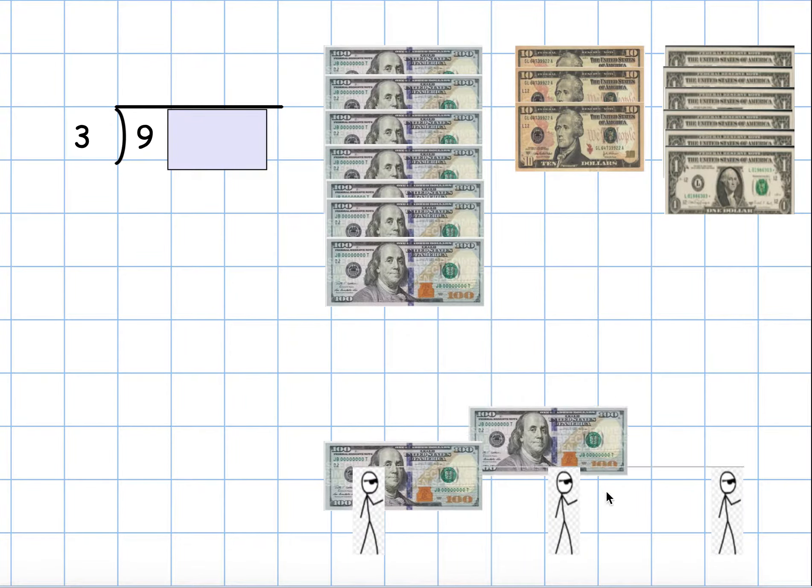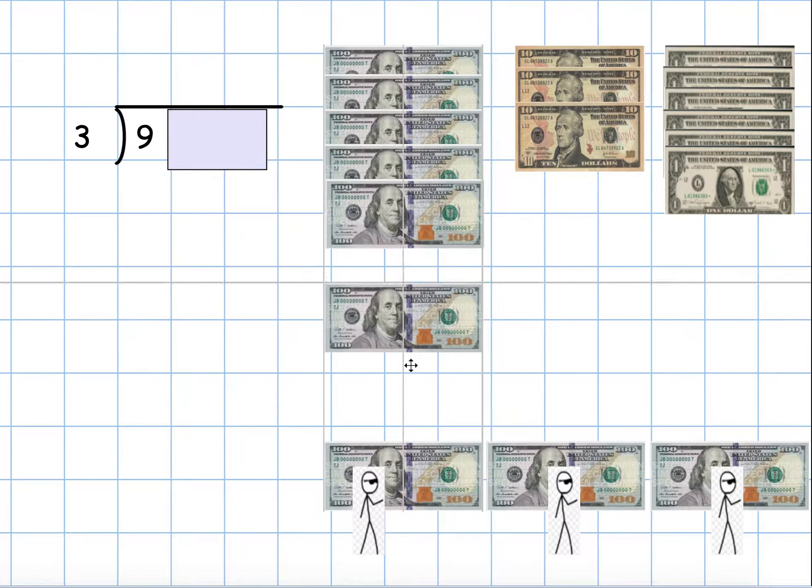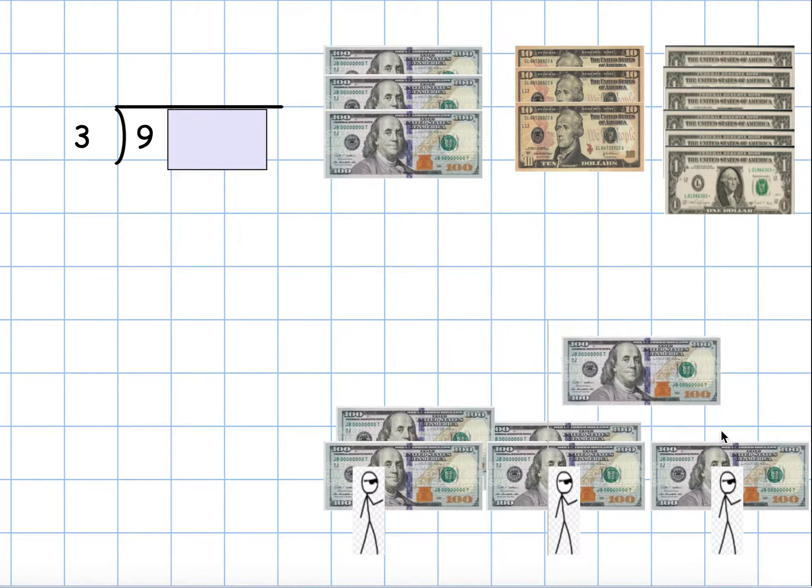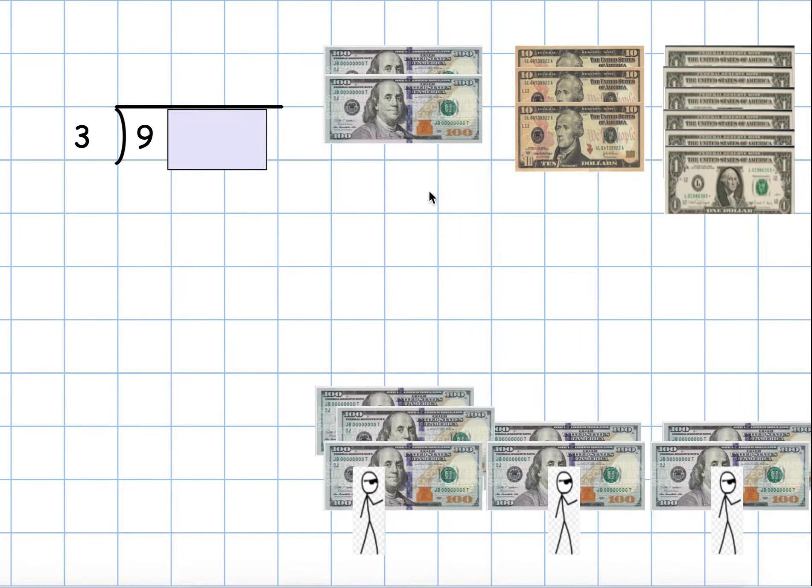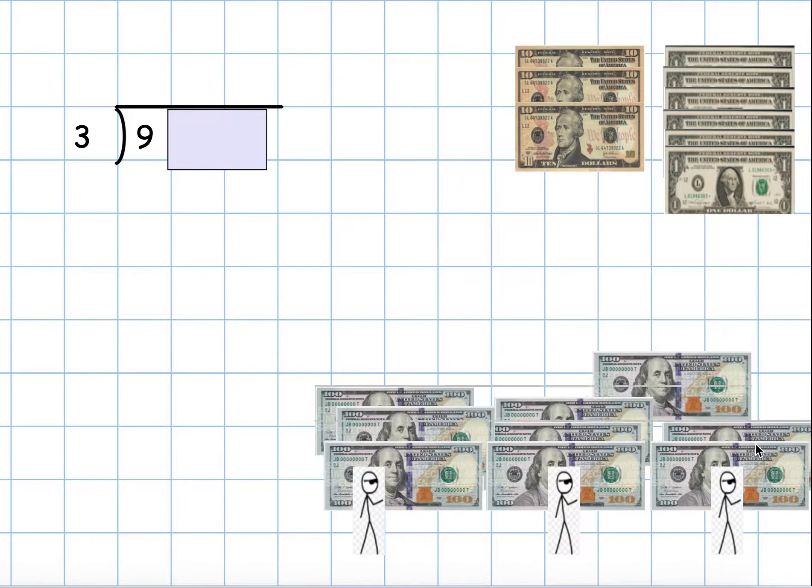One to here, one to here, one to here, since I'm sharing fairly. Two to here, two to this friend, two to this friend, and finally I can give one more $100 bill to each friend. So there are three $100 bills to each friend.